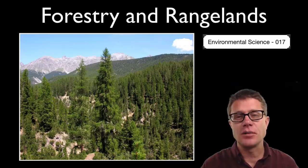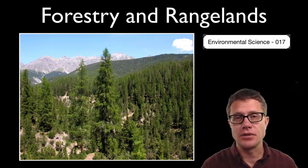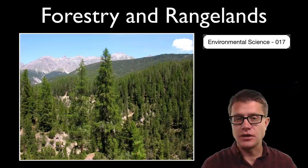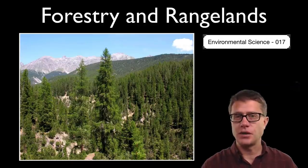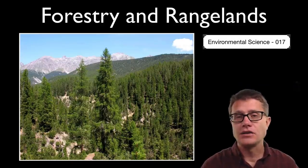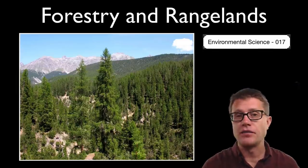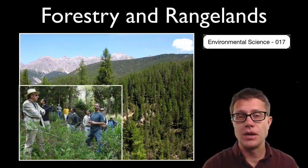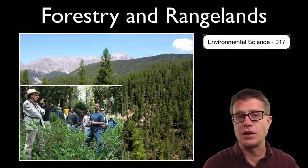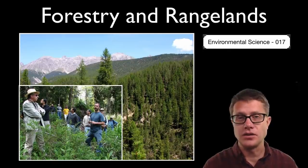Hi, it is Mr. Andersen and this is environmental science video 17. It is on forestry and rangelands. You might look at a picture like this and say it is wilderness, but it might not be. It might be a privately owned forest. And just like we have farmers on cropland, we might have foresters that are monitoring each of the trees and figuring out when is the best time to harvest them.